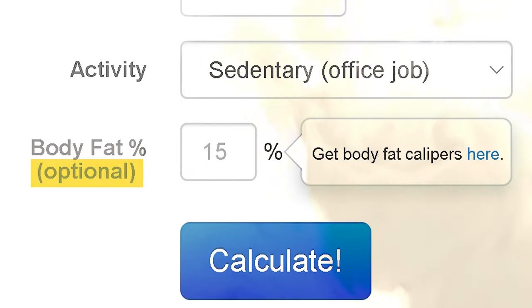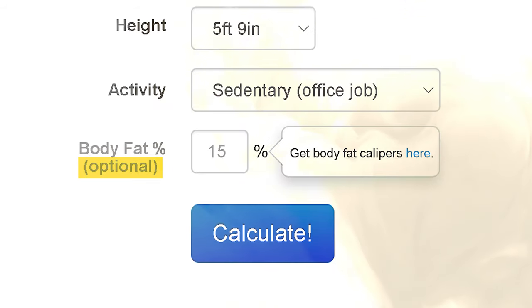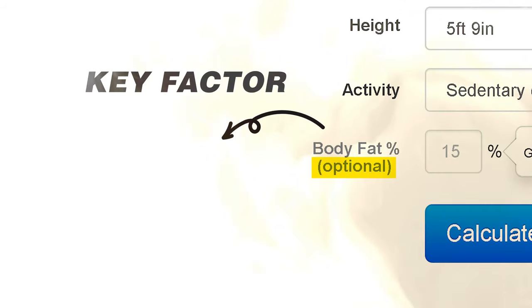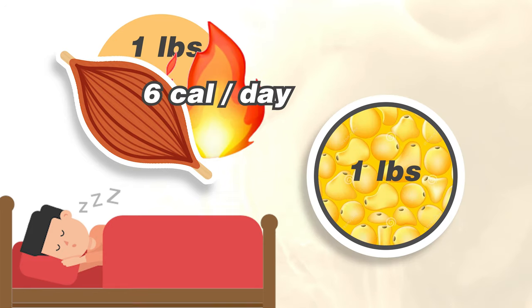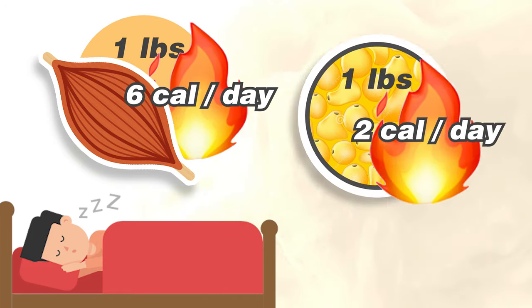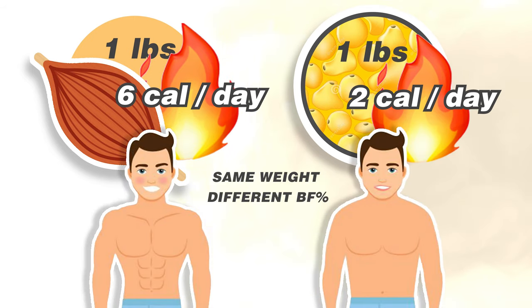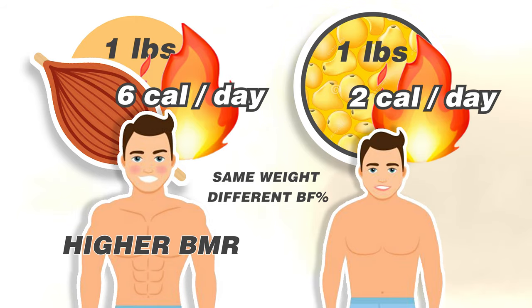Let's take a look at the inaccuracy from the BMR part first. Notice that body fat percentage is optional on the calculator, but it is actually the key factor to determine your basal metabolic rate. A pound of muscle at rest burns six calories per day, and a pound of fat at rest burns about two calories a day. So if two people with the same weight have different body fat percentages, the one with higher lean body mass will have a higher basal metabolic rate. Therefore, if you want a closer starting point for your accurate TDEE, it's best to know your body fat percentage.